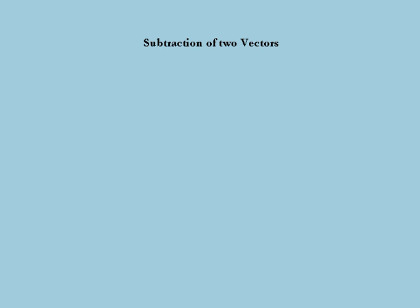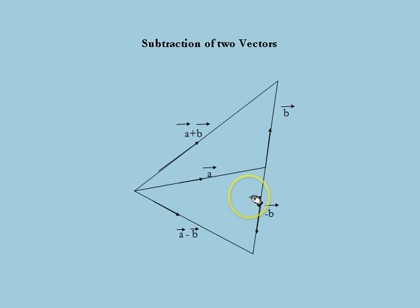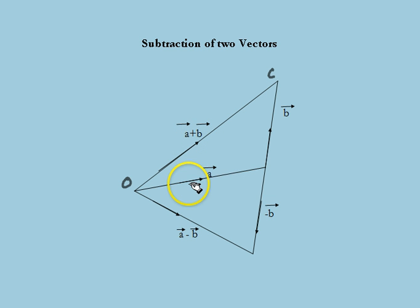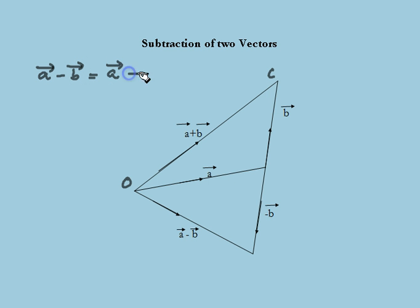We have already discussed the addition of two vectors, and today we are going to discuss the subtraction of two vectors. Let us consider two vectors, vector a and vector b. The addition of these two vectors is obtained by the vector OC, which is equal to vector a plus vector b. Now, in order to subtract these two vectors, vector a minus vector b can be defined as the addition of vector a plus the negative of vector b.